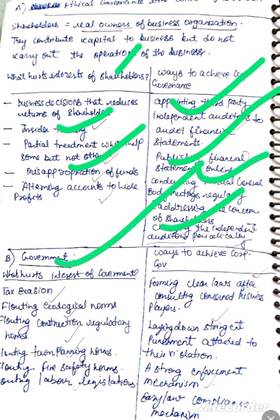Regarding the government's interest — tax evasion should be prevented. Ecological norms relating to the environment must be followed. Rules and regulations must be kept in line with regulatory norms. There are norms regarding the number of employees in particular industries that must be maintained.